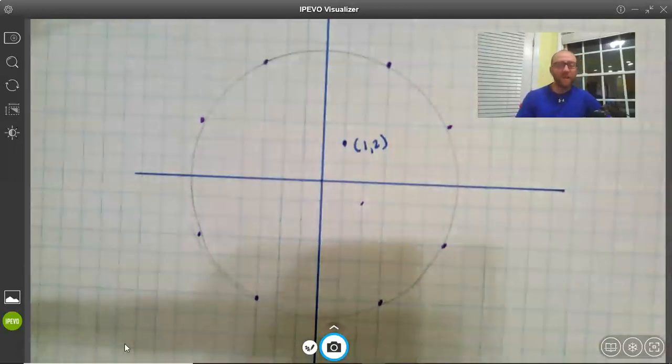So all the points that are any given distance, whatever that distance is, from some center, wherever that center is, form a circle. That's what a circle is. There you go.